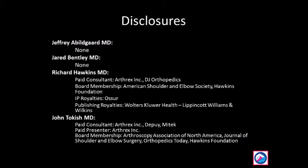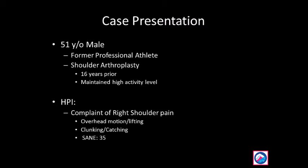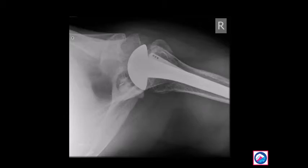Removal of a loose polyethylene glenoid component with subsequent bone grafting has traditionally been done through an open approach. Here we describe a technique for an all-arthroscopic approach in a previous high-demand athlete with profound glenoid osteolysis.